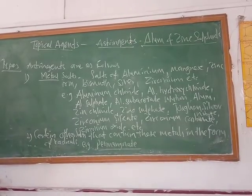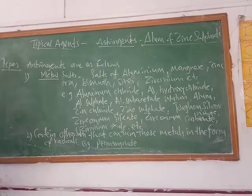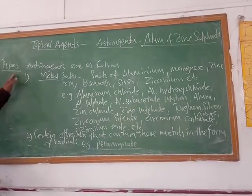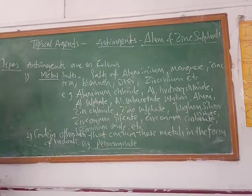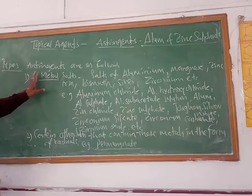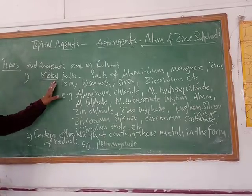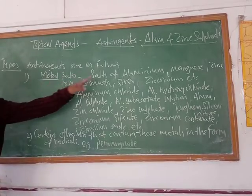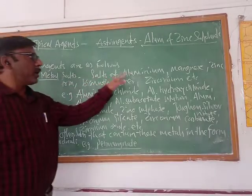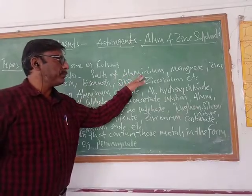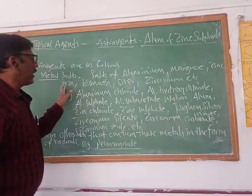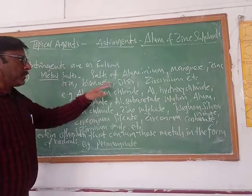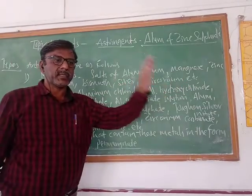We have discussed about the astringents. The types of astringents — the principal astringents are included in all types. There are two types. The first one is metal salts, which includes salts of aluminium, magnesium, zinc, iron, bismuth, silver, zirconium, etc.